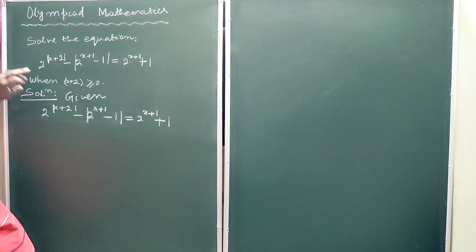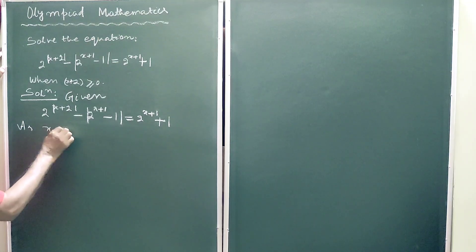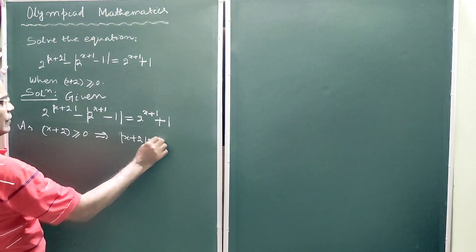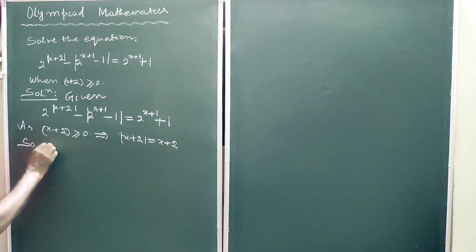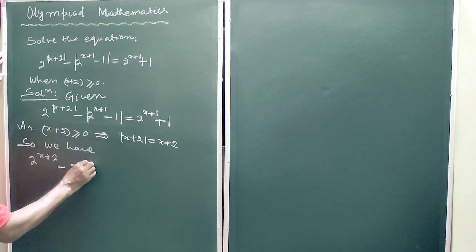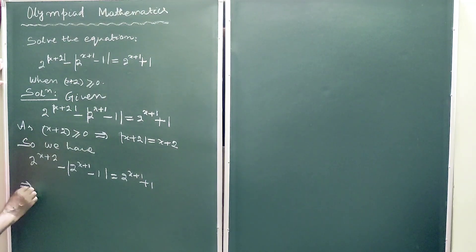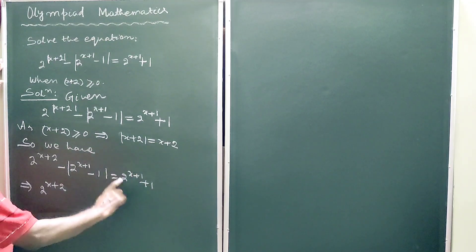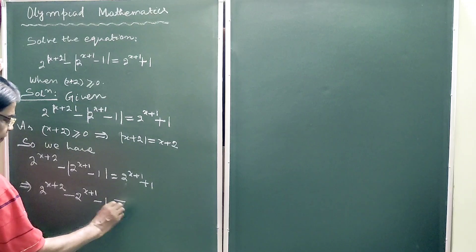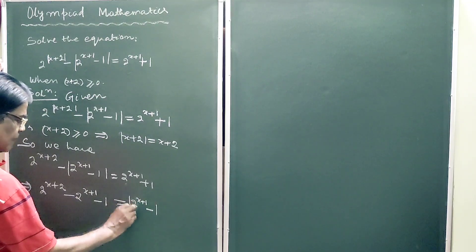This is the expression when x plus 2 is greater than or equal to 0. As x plus 2 is greater than or equal to 0, this implies the absolute value of x plus 2 equals x plus 2. So we have 2 to the power (x+2) minus 2 to the power (x+1) minus 1, greater than or equal to 2 to the power (x+1) plus 1. Bringing terms across, this implies 2 to the power (x+2) minus 2 to the power (x+1) minus 1 equals 2 to the power (x+1) minus 1, in absolute value.